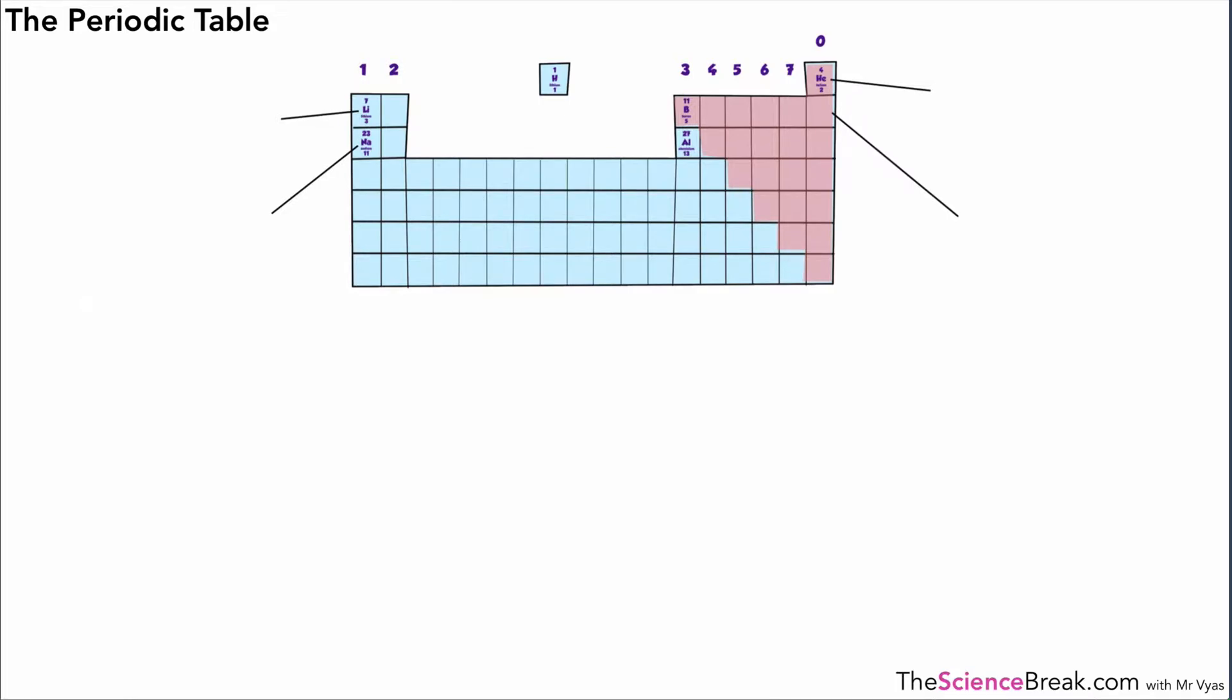Now we're going to look at some patterns in terms of the electron structure of the elements in different groups. If we take the top element in group 1, that's lithium. The electron arrangement is shown there. We've got two electrons in the first shell and one in the second shell.